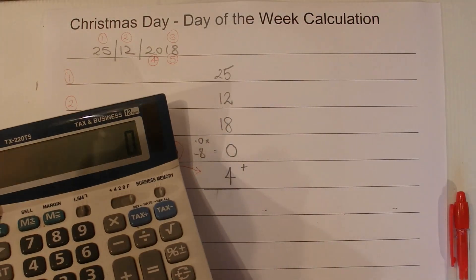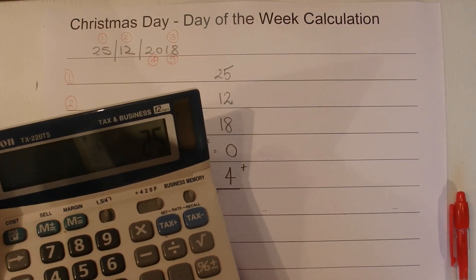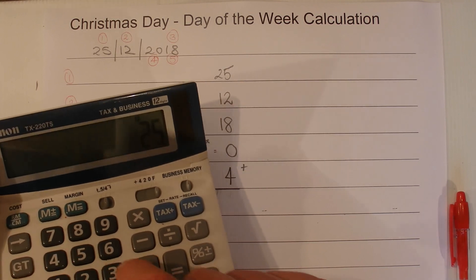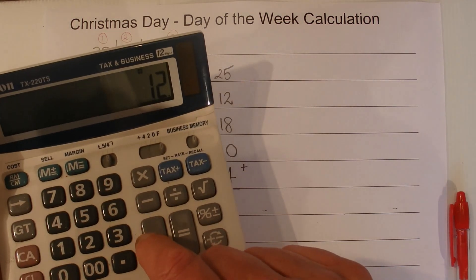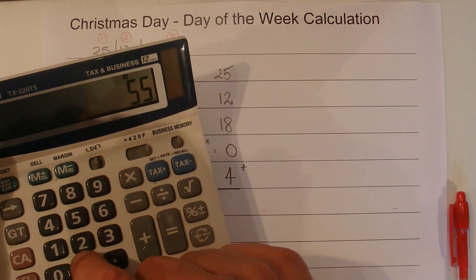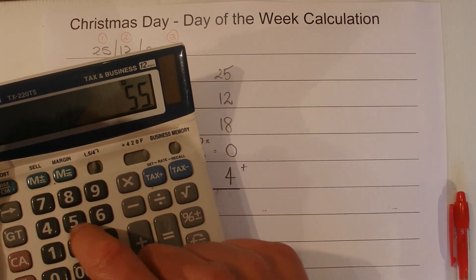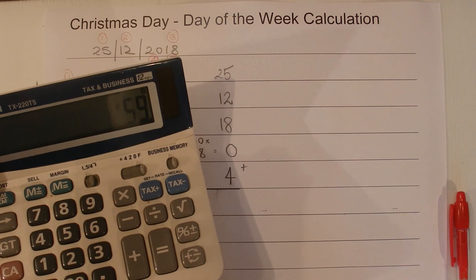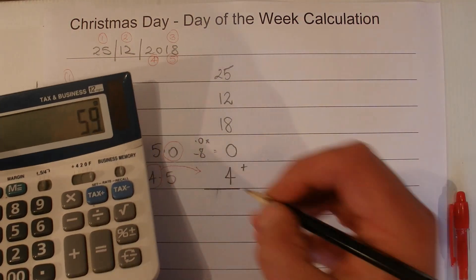So get out my trusty calculator, and 25 plus 12 plus 18 plus 0 plus 4 equals 59.